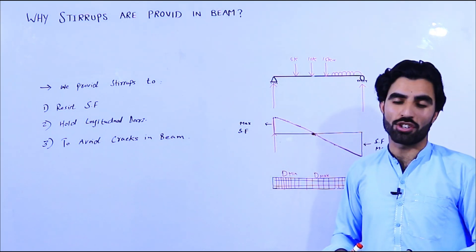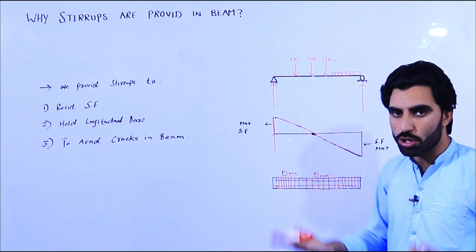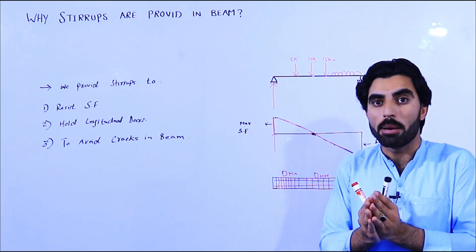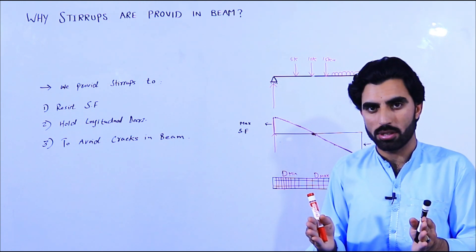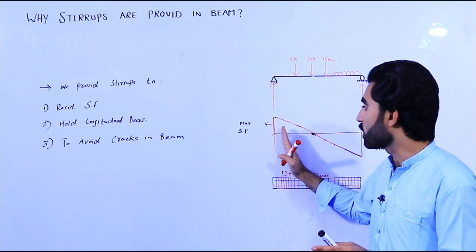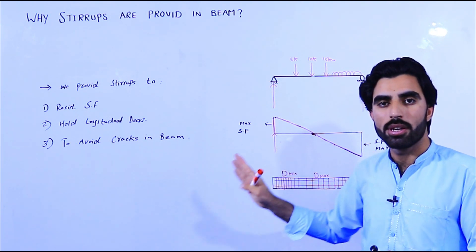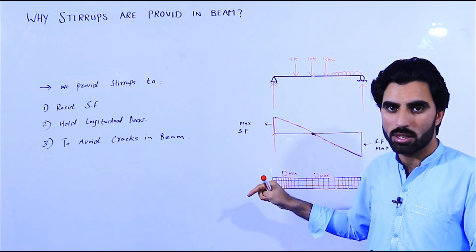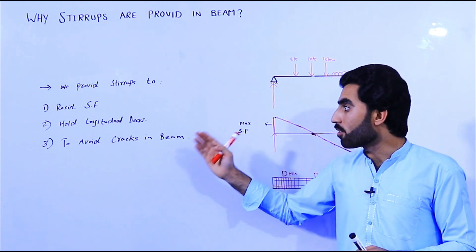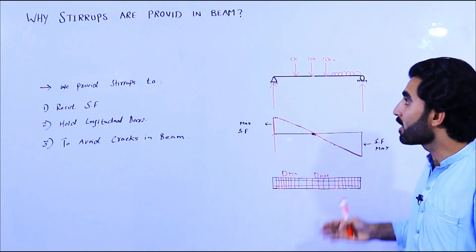If you don't provide stirrups, what will happen with the beam? First, the longitudinal bars cannot be held because they cannot make a good bond. Also, if you don't provide stirrups, especially at the support points, the structure will crack and it will be cut. Also, stirrups resist earthquake forces - this is also a main point.